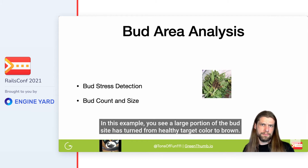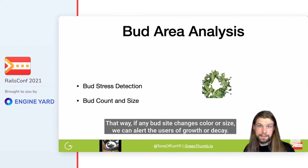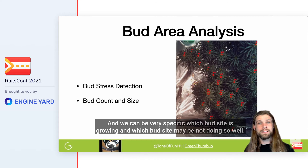In this example, you see a large portion of the bud site has turned from healthy target color to brown. We can also measure and count the size of individual bud sites we've detected. That way, if any bud site changes color or size, we can alert the users of growth or decay, and be very specific about which bud site is growing and which may not be doing so well.